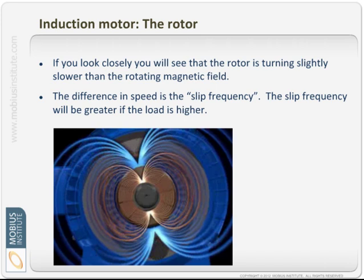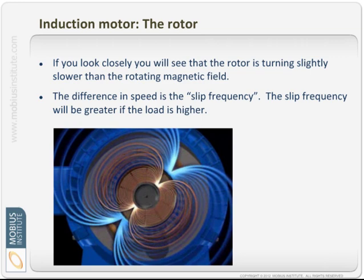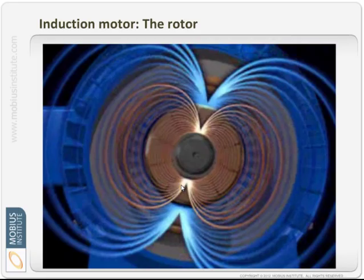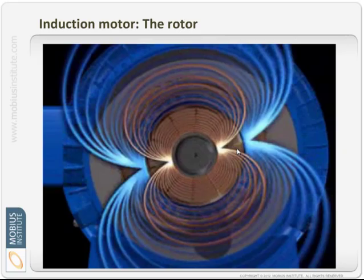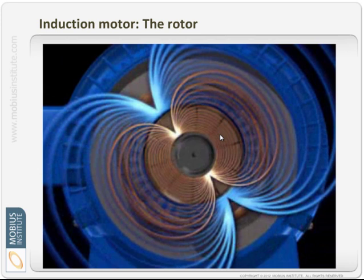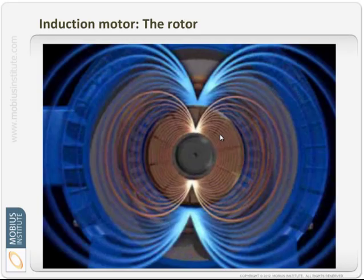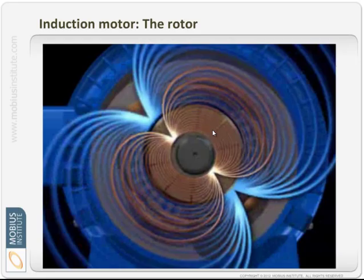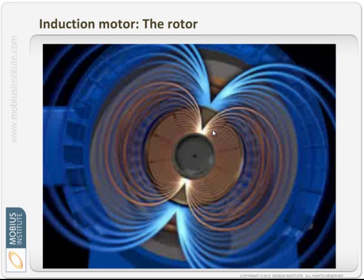That difference in speed is called the slip frequency. If you put more load on the rotor, the difference in speed becomes greater. You can see in the animation that the magnetic field is actually rotating faster than the rotor — I'm exaggerating this so you can see what's going on — and that difference is the slip frequency. That's why induction motors don't turn at exactly 1800 RPM or 1500 RPM; they always turn a little slower.